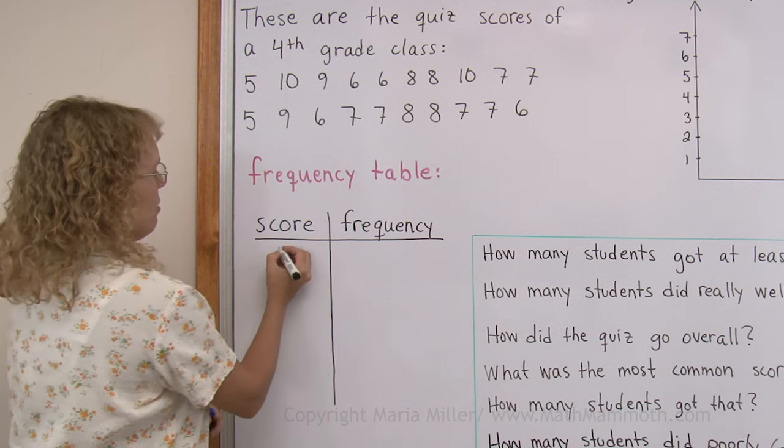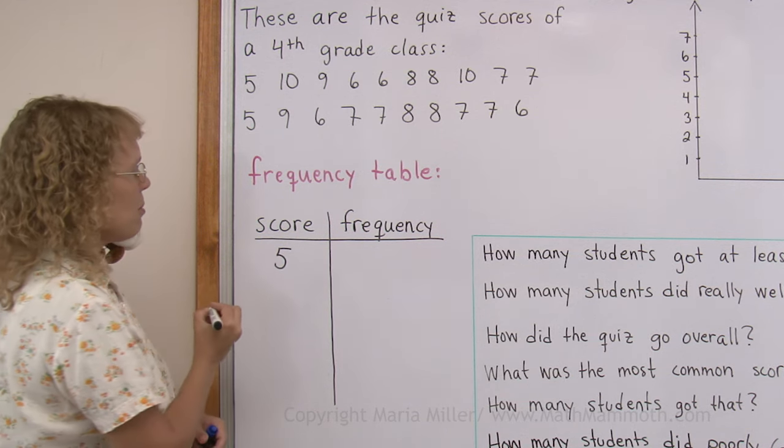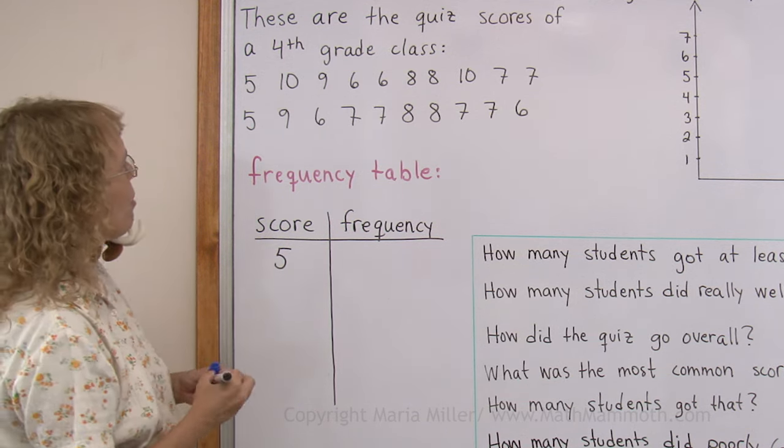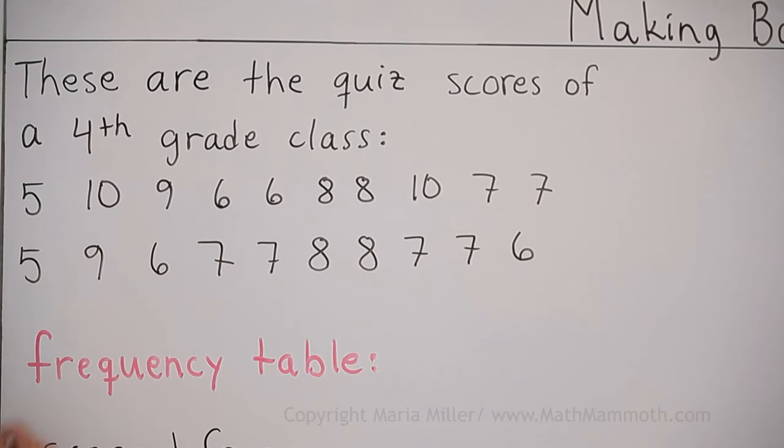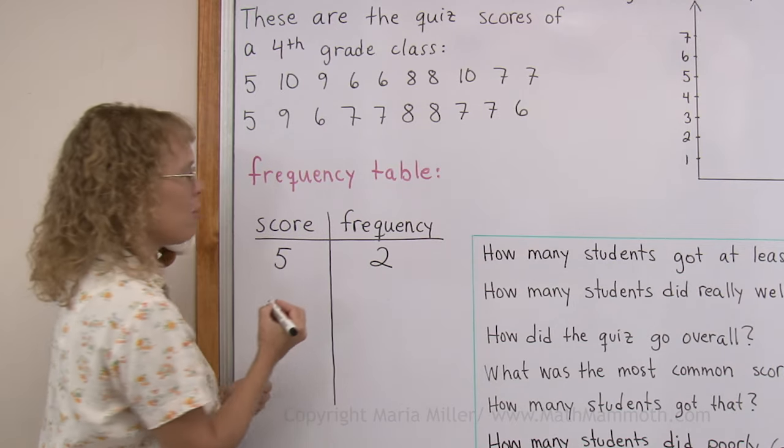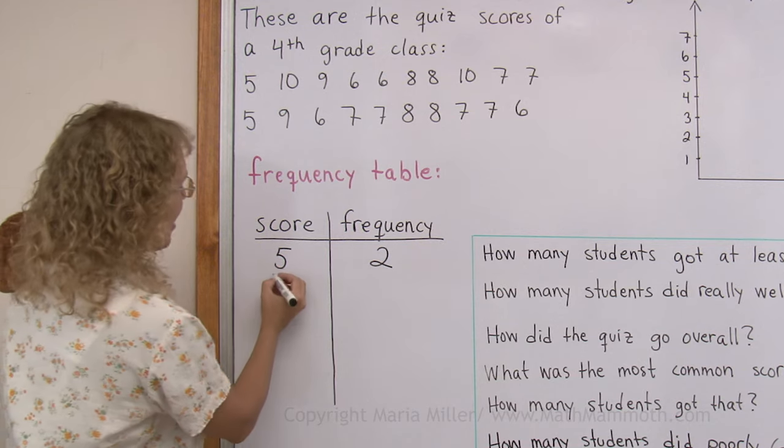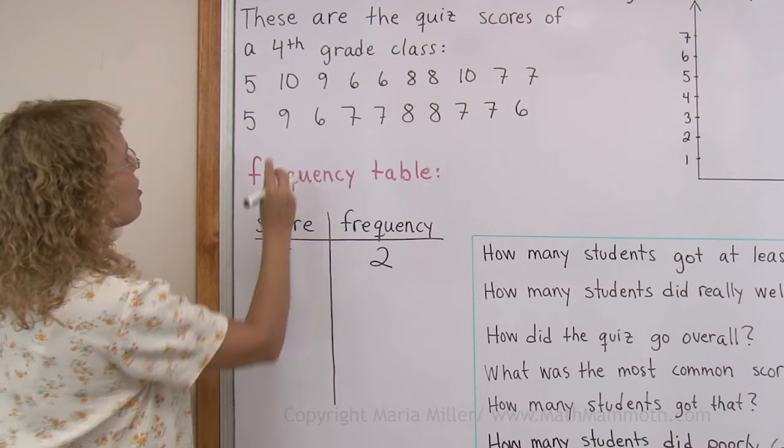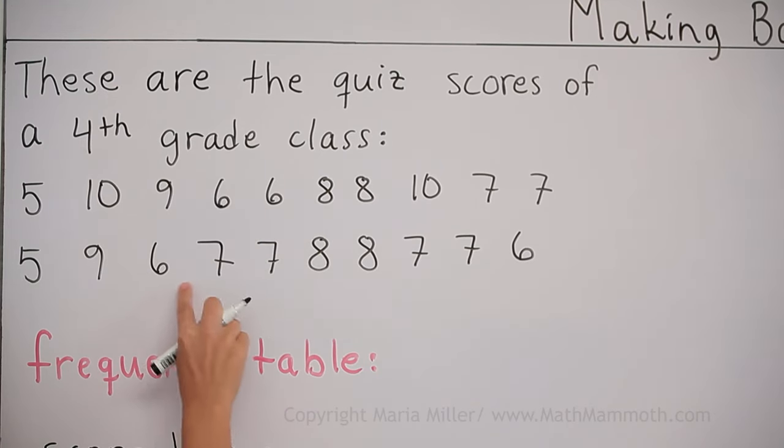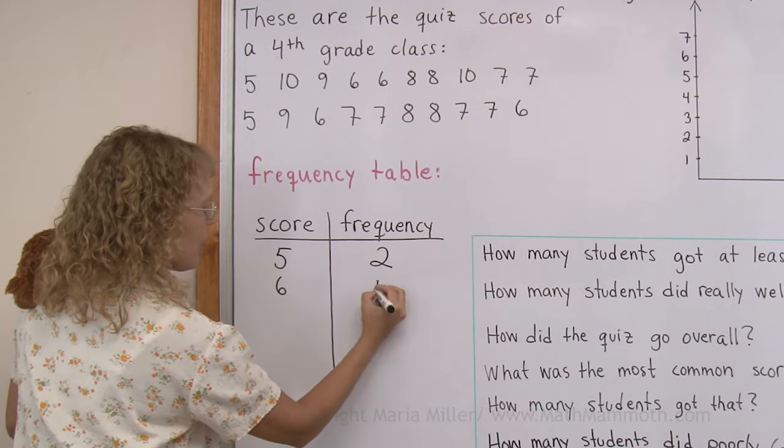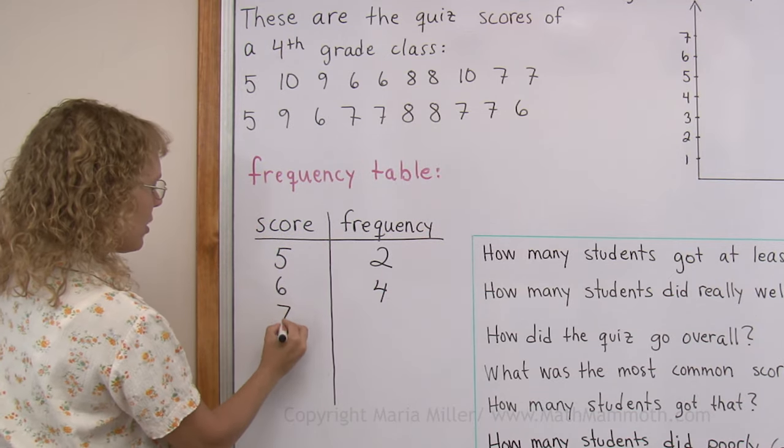So, five. Some students got five points. But how many? Two students. That's how often or how many. The frequency. And then six. We need to count here. There's one, two, four students got the score of six points.